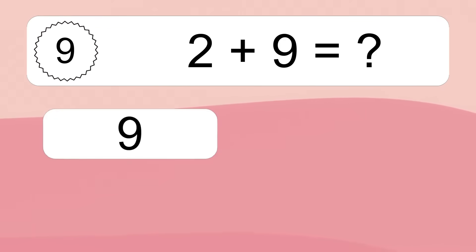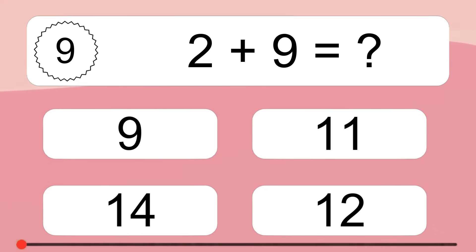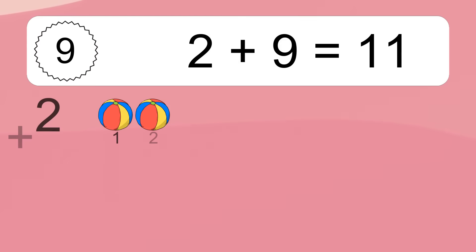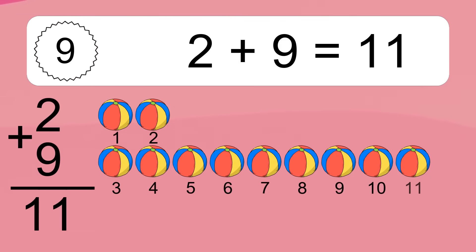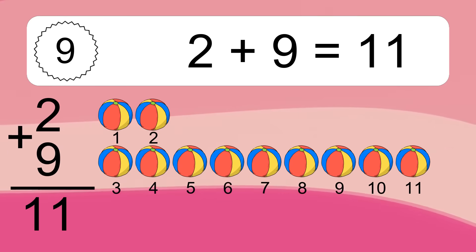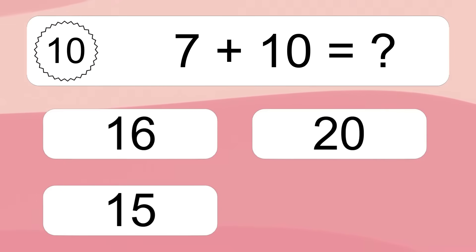2 plus 9 equals what? 2 plus 9 equals 11. Let's count it: 1, 2, 3, 4, 5, 6, 7, 8, 9, 10, 11.